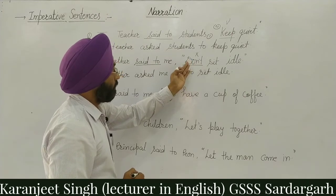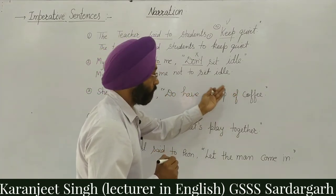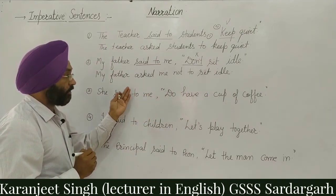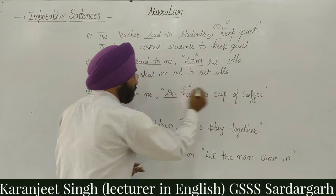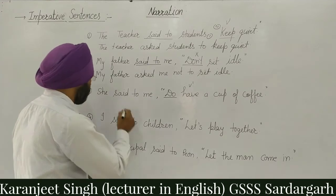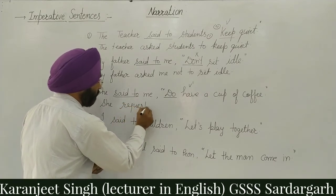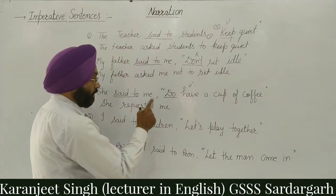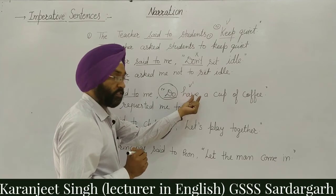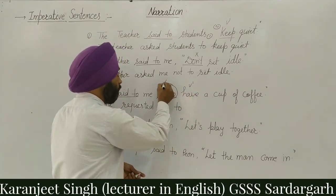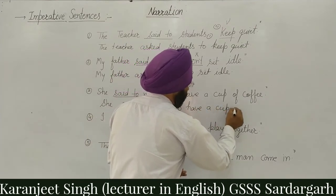Third practice sentence: 'She said to me, Do have a cup of coffee.' Is mein request show ho rahi hai — lekin request ko emphasize karne ke liye extra 'do' ka use kiya gaya hai. Verb ki first form aage milti hai toh ye bhi imperative sentence ki tarah change hoga. 'Said to' change hoga 'requested me' mein. Jab extra 'do' diya hota hai toh 'do' ko hata dete hain. Conjunction 'to' ke baad verb ki first form: → She requested me to have a cup of coffee.